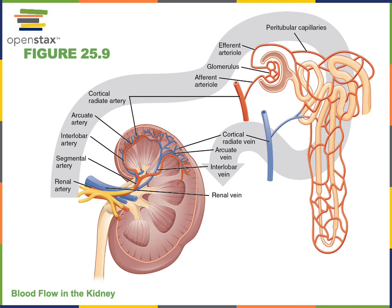Then the cortical radiate arteries, which are branching through the renal cortex, will carry blood towards smaller branches known as afferent arterioles. The afferent arterioles carry blood into a special capillary bed known as the glomerulus. The glomerulus is a fenestrated capillary bed where the process of filtration occurs.